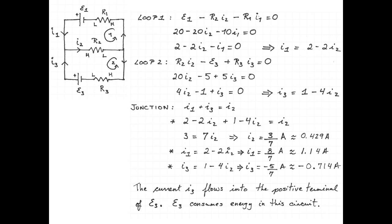The negative current means that current I3 is in the wrong direction on my picture. Current I3 actually flows into the positive side of the battery E3. So if E3 was a rechargeable battery you could imagine that it's getting recharged. It actually consumes energy in the circuit.